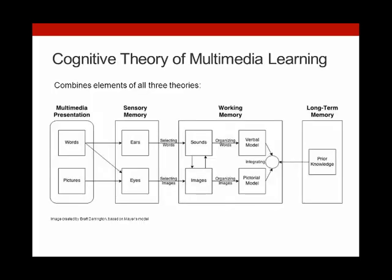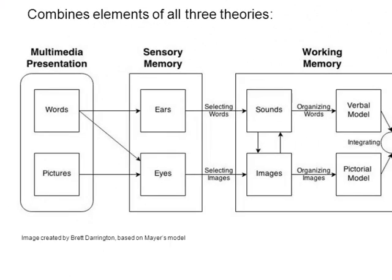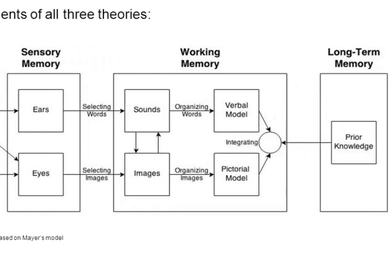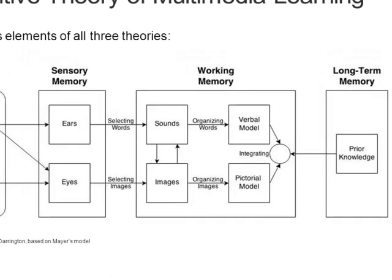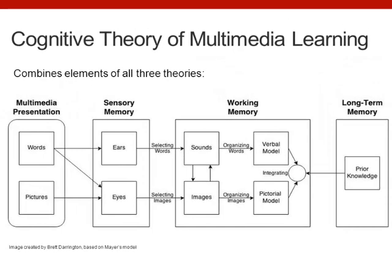Now, here's the model. In this model, we see many of the principles found in the previous research, most notably the dual channels for verbal and visual media. Notice that this model starts with media presentation — words or pictures. We either hear or read words and we see pictures. We then select the words and images we'll pay attention to, and then through our working memory make sense of the multimedia using our prior knowledge as a guide. You should notice aspects of Paivio's, Sweller's, and Baddeley's work here. This really is an amalgamation of all their work, but Mayer and his colleagues made it work especially well for multimedia research.